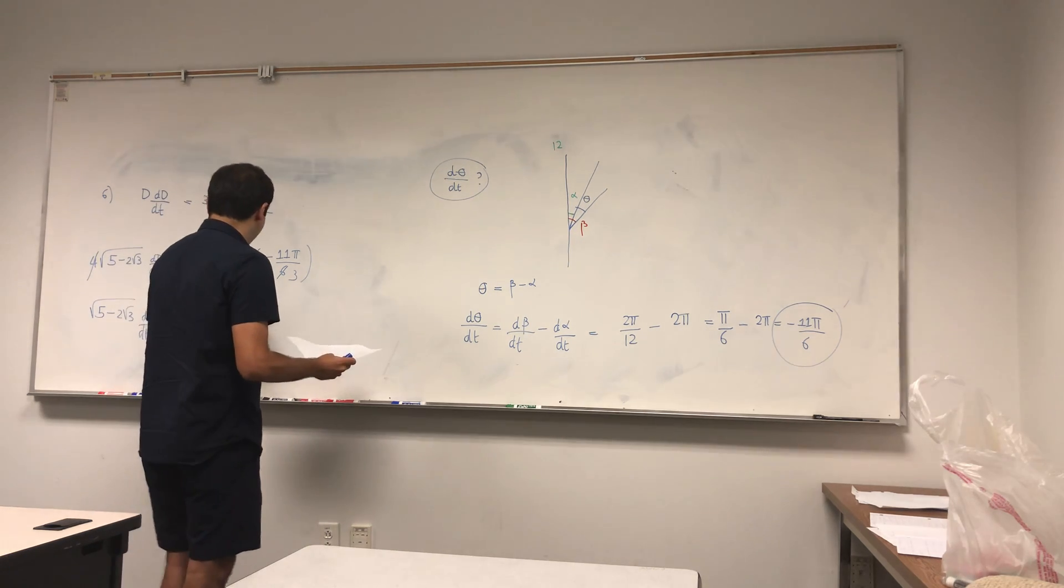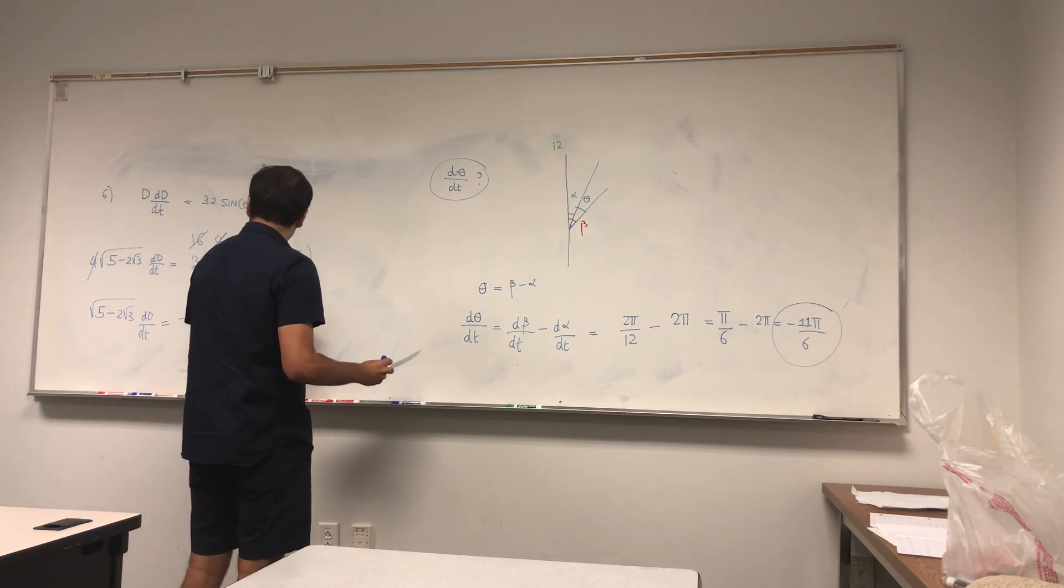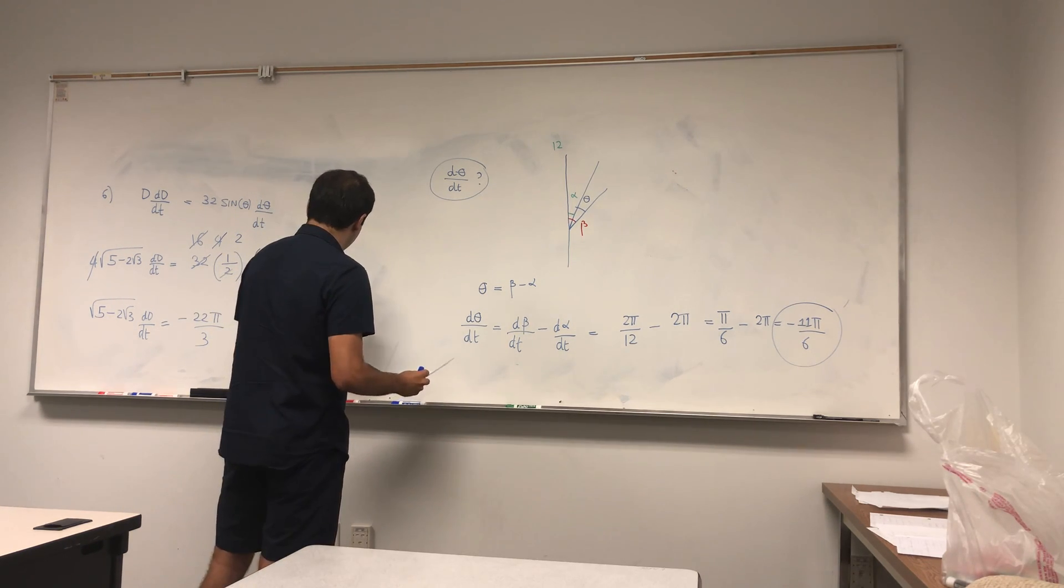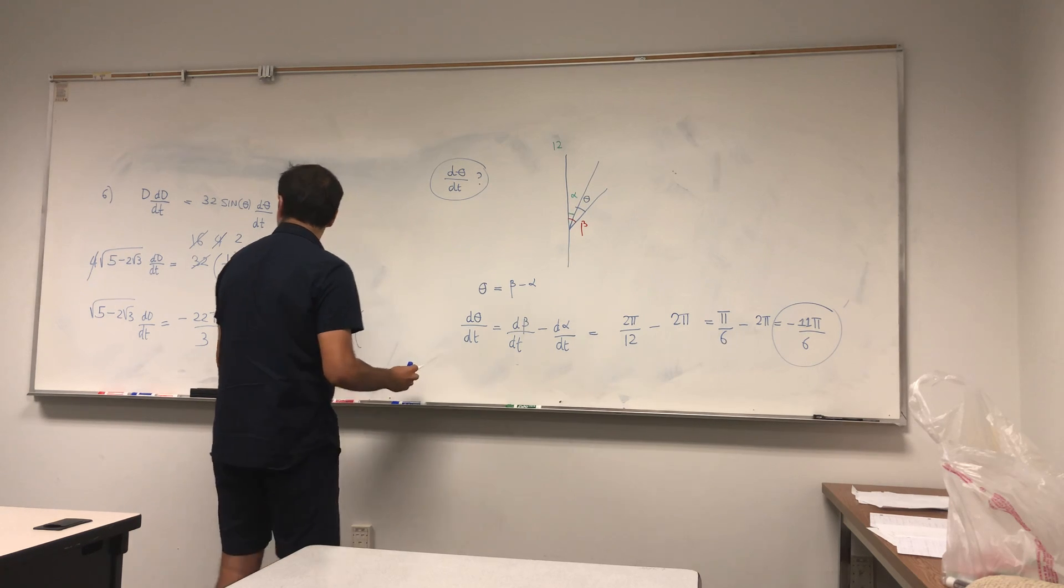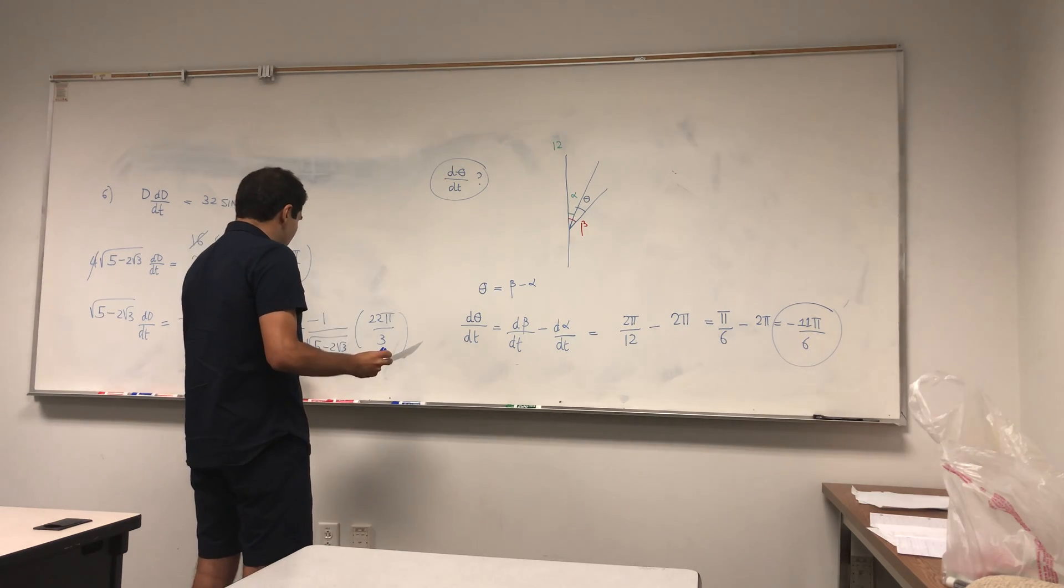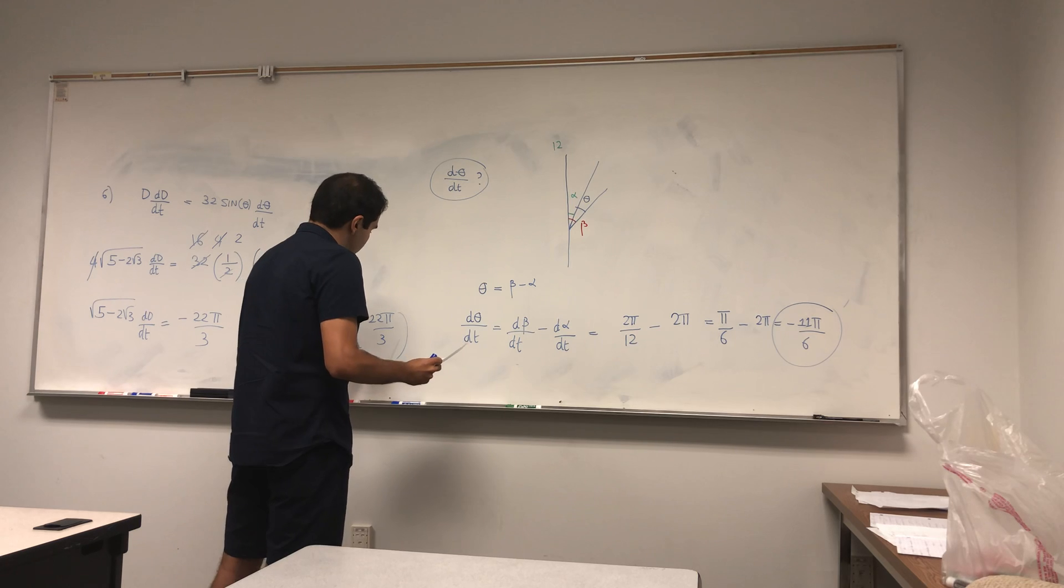And so last but not least, dD/dt is 1 over square root of 5 minus 2 square root of 3, and I guess minus that, times 22 pi over 3, which I found to be roughly minus 18.6 millimeters per hour.